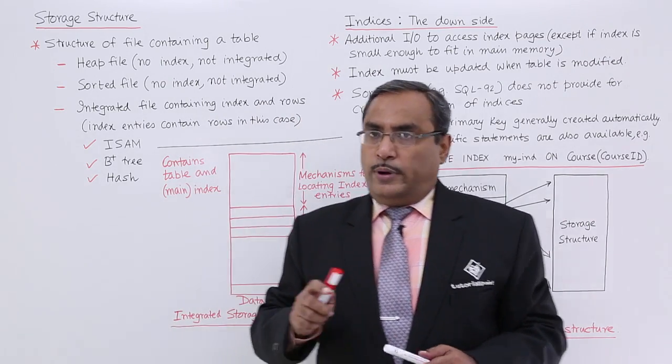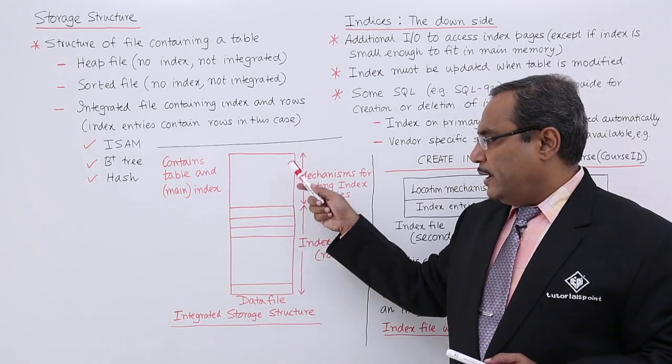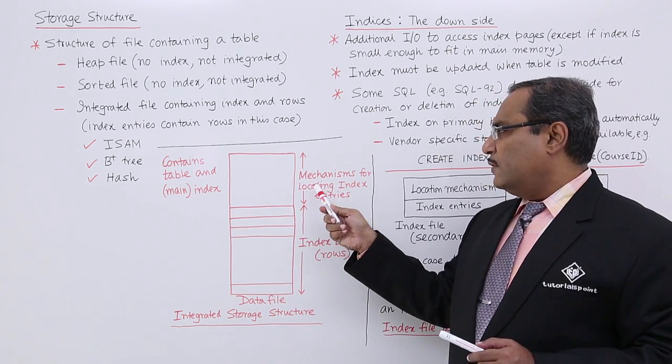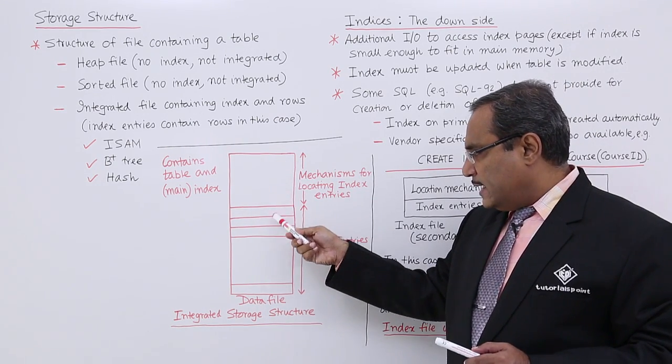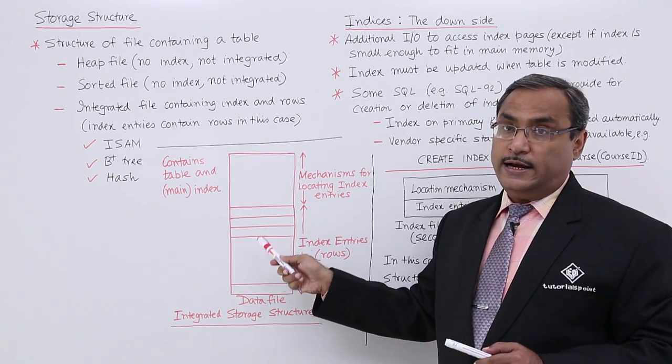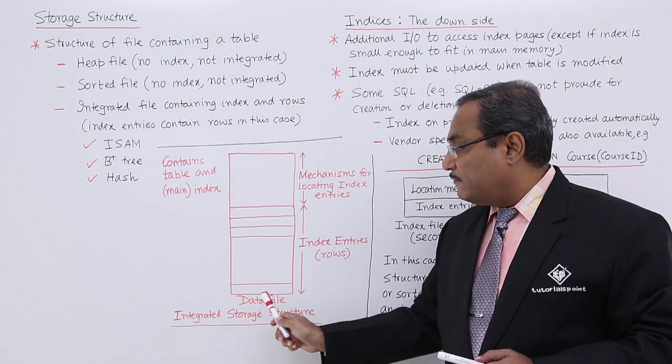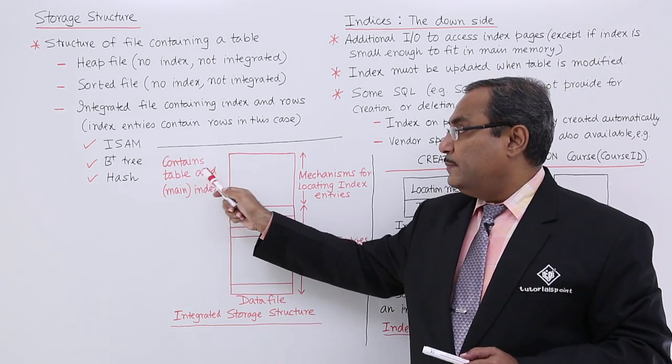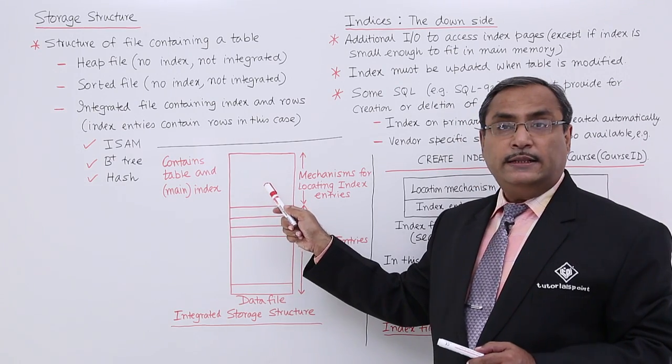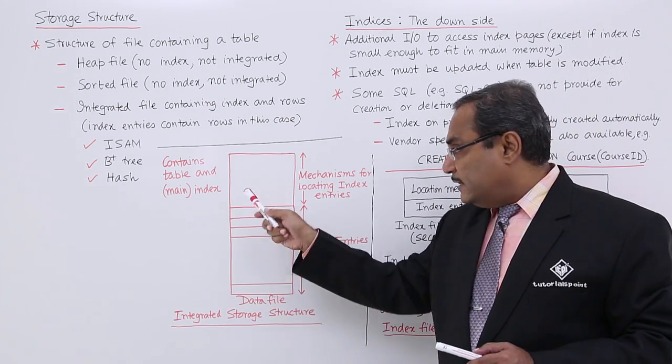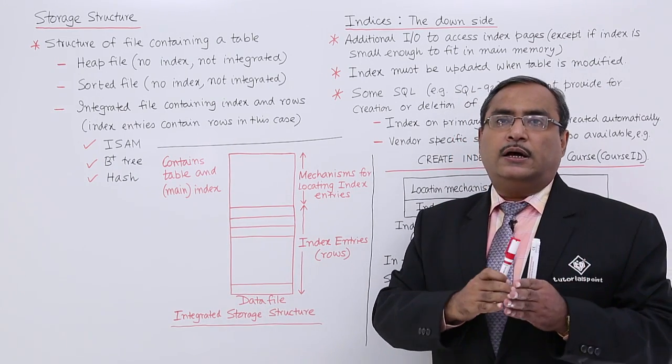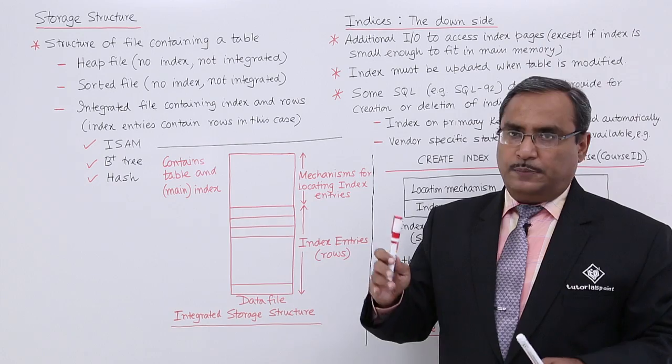Now we are having two types of things. One, where the integrated storage structure - that means the mechanism for locating index entries and the respective rows or records - they have got integrated in the same file. It contains the table and the main index. From here we will be getting the respective row index, and there we can jump and get the other details of the respective record.